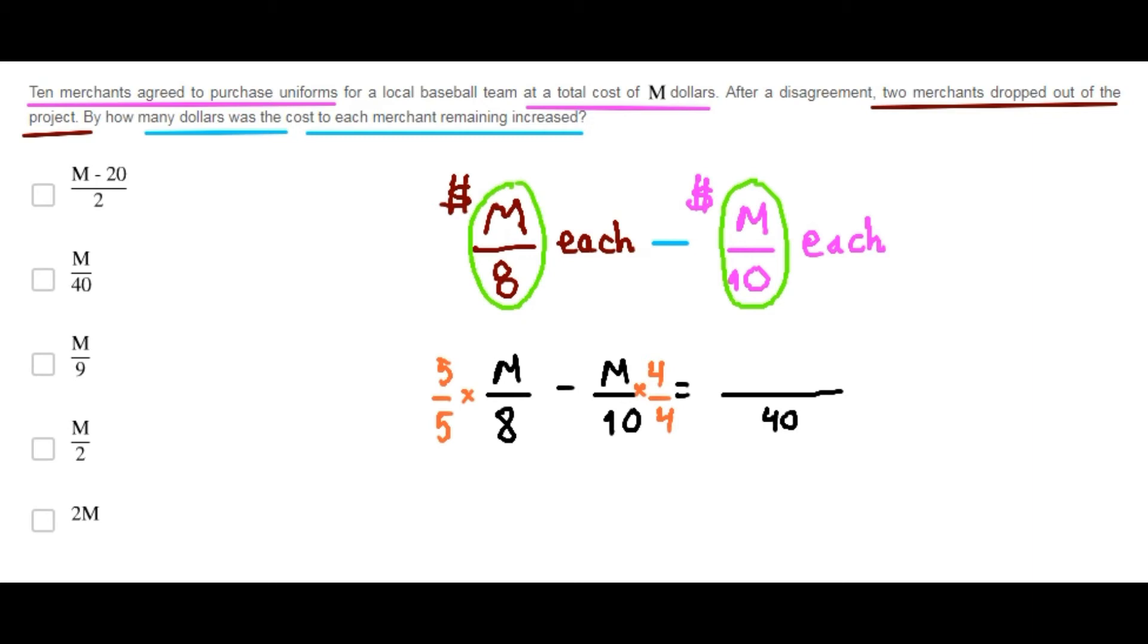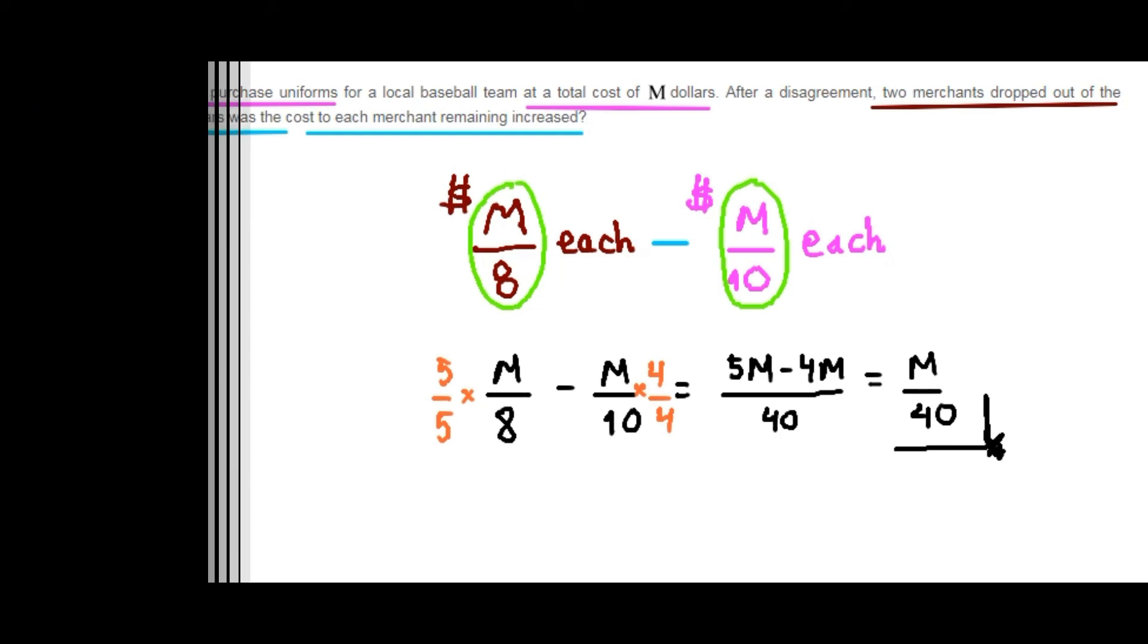The numerator will be 5 times M minus 4 times M. M over 40 is the answer. The choice B is correct.